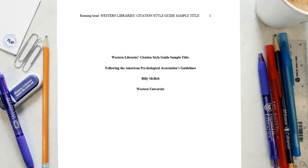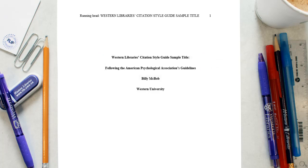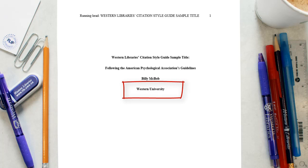Let's walk through these. First, your title should be centered in the upper half of the page. APA recommends capitalizing the first letter of each word and that your title exceed no more than 12 words in length. It should not contain abbreviations. Secondly, the author's name should appear centered beneath the title, first name first, then last name last. Do not include titles such as doctor or degrees such as PhD. Lastly, beneath the author's name, type the institutional affiliation, which indicates the location where the authors conducted their research.